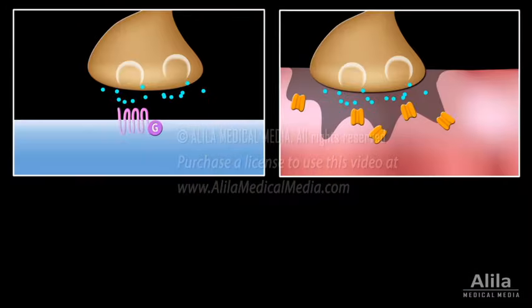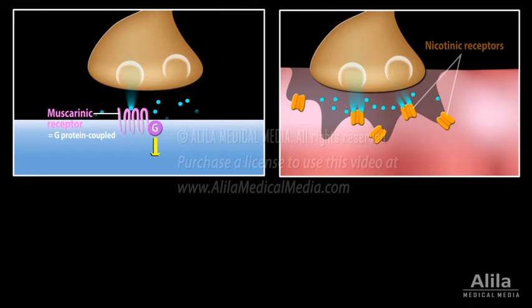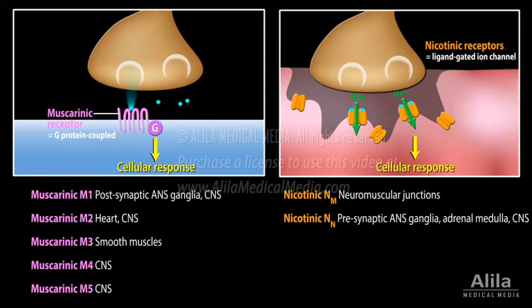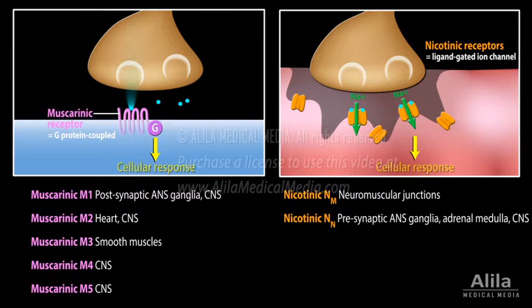There are two main types of acetylcholine receptors: muscarinic and nicotinic. Each type has several subtypes or classes, and each receptor class is specific to certain synapses or tissues. Cholinergic agonists are drugs that mimic or enhance the action of acetylcholine, while cholinergic antagonists are those that inhibit its action.